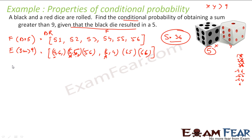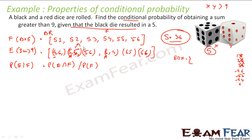Probability of E given F equals probability of E intersection F divided by probability of F. E intersection F contains the elements where black is 5 and sum is greater than 9: that is (5,5) and (5,6) — two elements. So P(E∩F) = 2/36 and P(F) = 6/36. Therefore P(E|F) = (2/36)/(6/36) = 1/3.